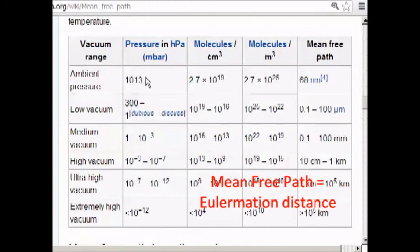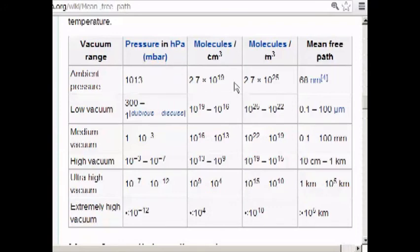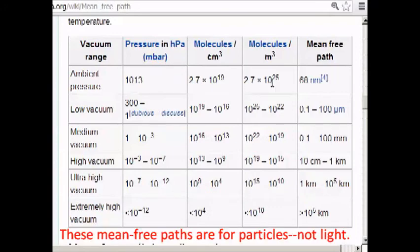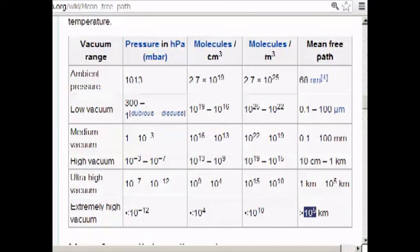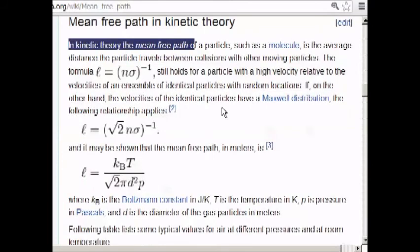Here's a chart that gives the mean free path at various pressures of air, I guess. So we have mean free paths of 68 nanometers at regular Earth-type pressure up to an extremely high vacuum, as much as 100,000 kilometers before the average particle will collide with something else.